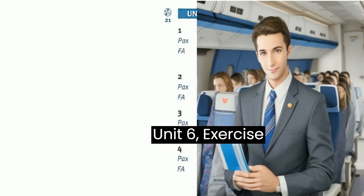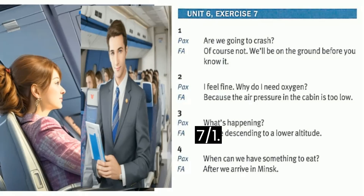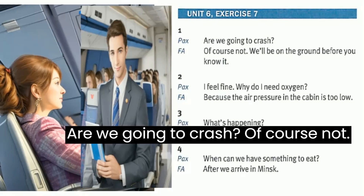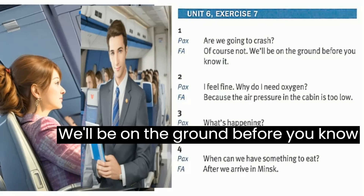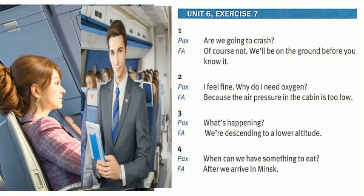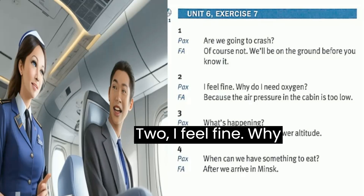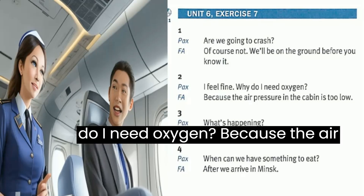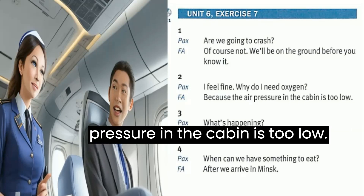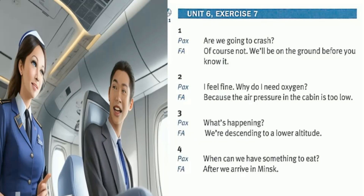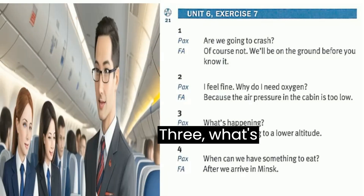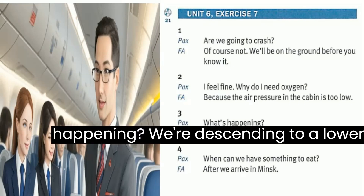Unit 6, Exercise 7. Are we going to crash? Of course not. We'll be on the ground before you know it. I feel fine. Why do I need oxygen? Because the air pressure in the cabin is too low. What's happening? We're descending to a lower altitude.